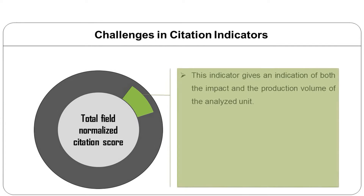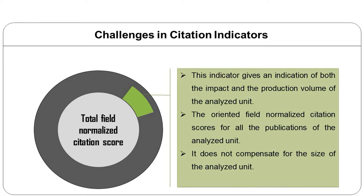Field normalized score: this indicator corresponds to the relative number of citations to publications from a specific unit compared to the world average of citations to publications of the same document type, age, and subject area. The limitations include that if normalization is done on an article level, a few highly cited articles in a moderately cited research area may contribute disproportionately to the value of the field normalized citation score. It also does not compensate for the size of the analyzed unit.